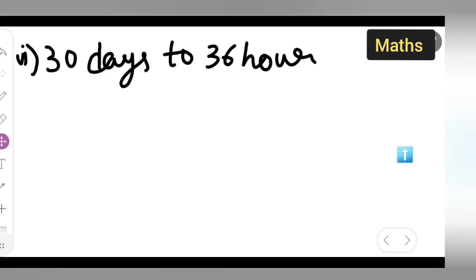Let's start with the problem: 30 days to 36 hours. We need to convert 30 days. Remember that one day equals 24 hours.